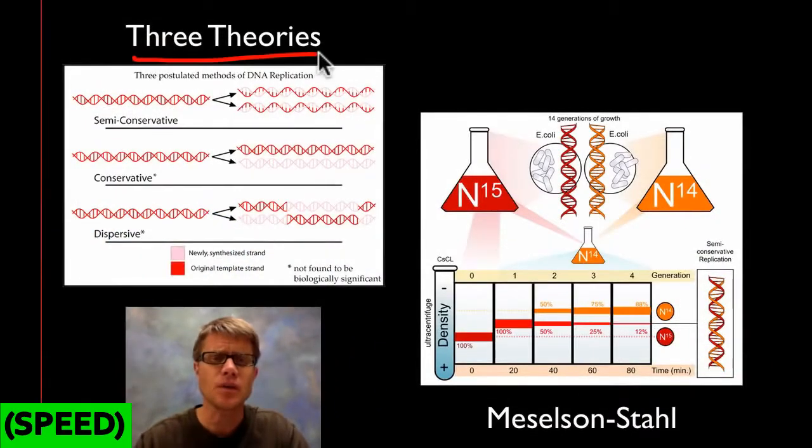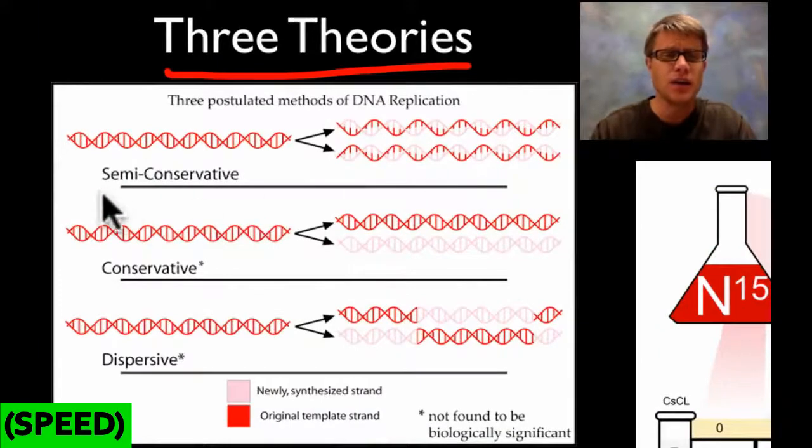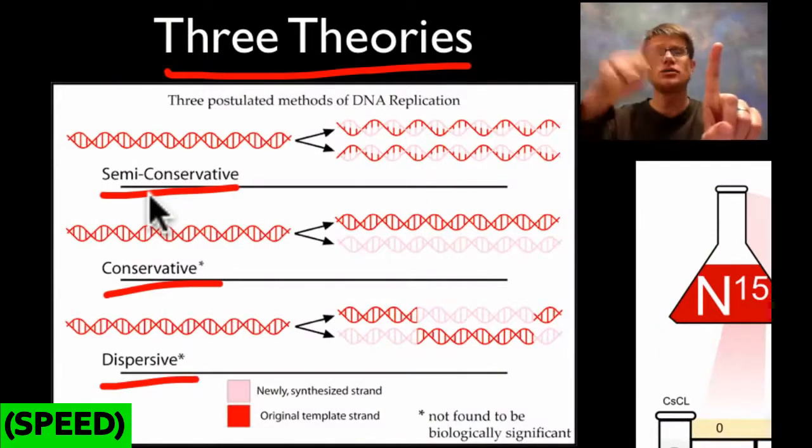And so basically, when they figured out the structure of DNA, three theories came about as to how it actually makes copies of itself. The first is semi-conservative, conservative, and dispersive. Watson and Crick actually believed in this. They believed that DNA would split in half, and then you'd copy new strands on either side.